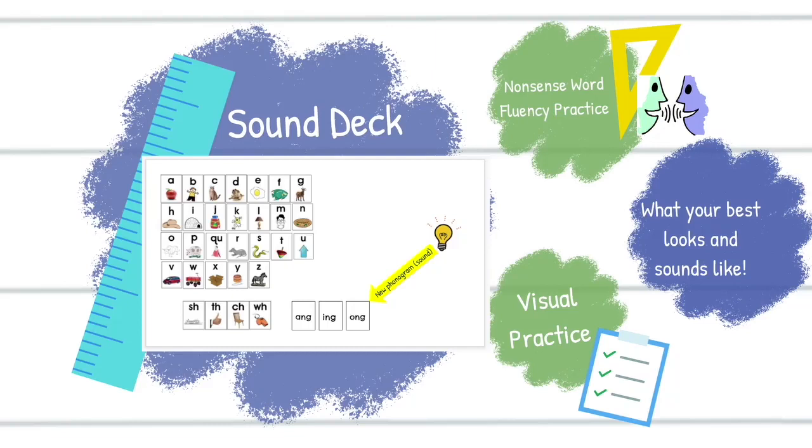Let's go! M, man, m. N, nest, n. O, ox, ah. P, pig, p. Q, queen, qu. R, rat, r. S, snake, s. T, top, t. U, up, uh. V, van, v. W, wagon, w. X, box, x. Y, yo-yo, y. Z, zebra, z. Those are all of the letters that make up our alphabet and now we're ready to practice those digraphs that we have been working on in previous lessons. Remember digraphs are when we have two letters working together to say one sound.